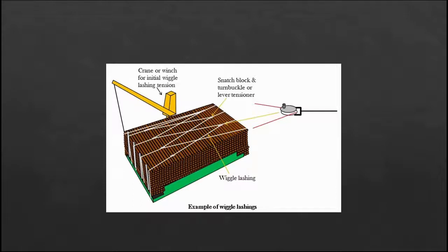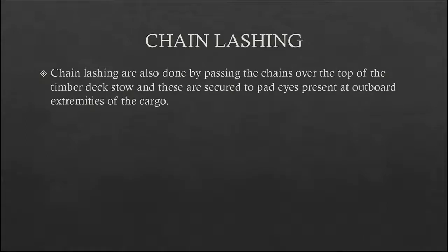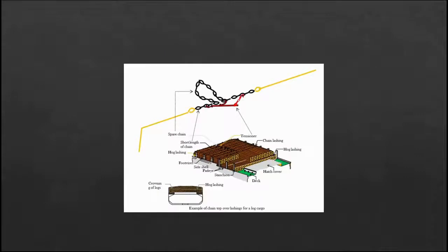Chain lashing involves chains where one end is secured to the deck through pad eyes and the other end is passed over the top of the timber load and tightened using a snatch block.